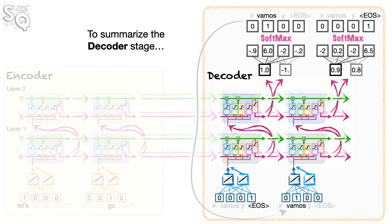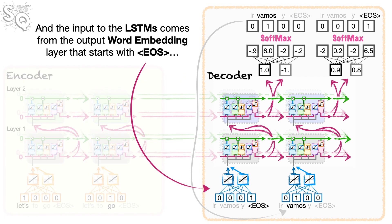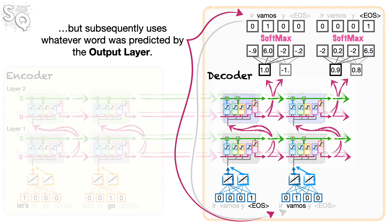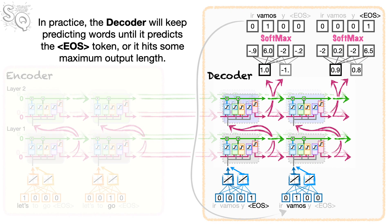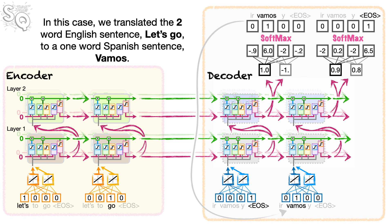To summarize the decoder stage: the context vector, created by both layers of the encoder's unrolled LSTM cells, is used to initialize the LSTMs in the decoder. The input to the LSTMs comes from the output word embedding layer that starts with EOS, but subsequently uses whatever word was predicted by the output layer. The decoder will keep predicting words until it predicts the EOS token or hits some maximum output length. By decoupling the encoder from the decoder, the input text and translated output text can be different lengths — in this case, the two-word English sentence 'Let's Go' was translated to the one-word Spanish sentence 'Vamos.'